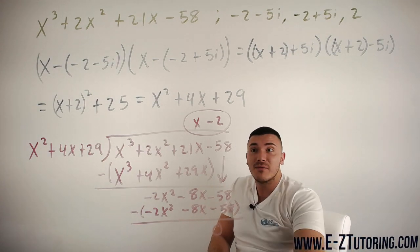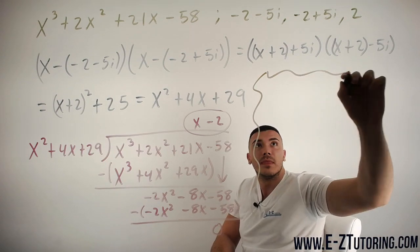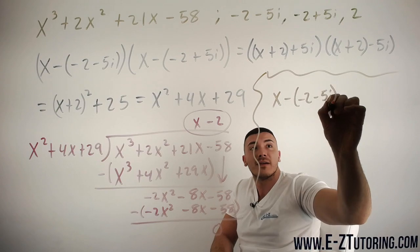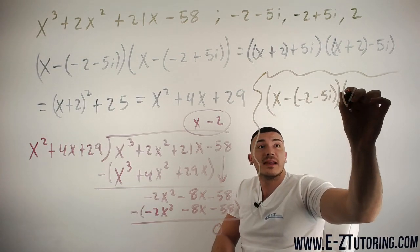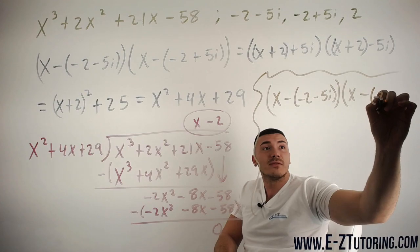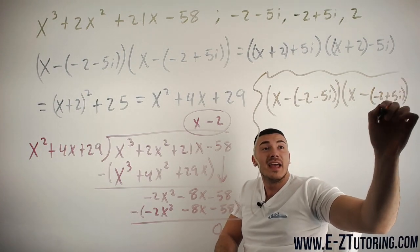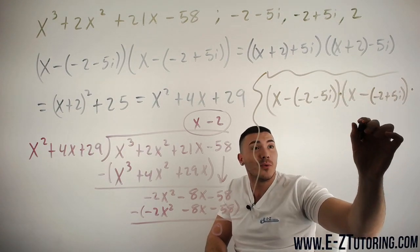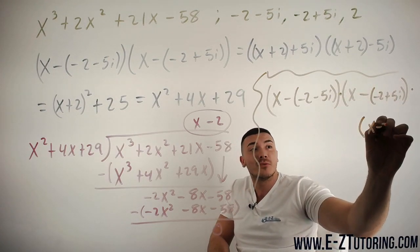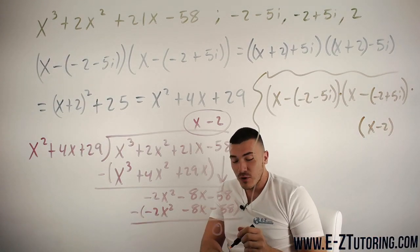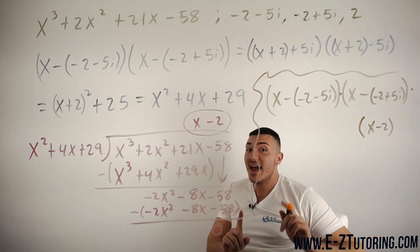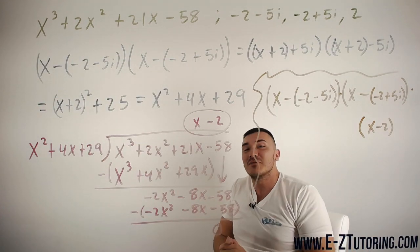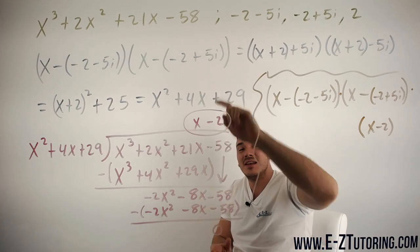So from here, just to sum up everything we did, we took x minus that root, x minus (-2-5i), and multiplied it by x minus this root, -2+5i. And if we took all that and we multiplied it, kind of running out of room here, but if we multiplied it by x-2, which is the last root we just found, and if you were to actually sit here and multiply all of this out, I guarantee you, you would get this polynomial we started with. So that is how you can find the remaining zeros when you are given a complex root.